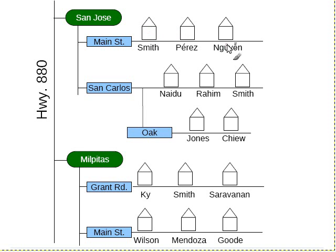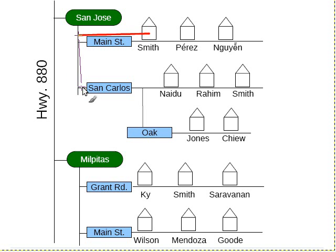When things are on the same street, it's very easy. Let's say I want to go from the Smith house to the Raheem house. We can still do this with a relative path name. We're both on Main Street right now, so we have to go back to the Connector Road, and then we have to go down to San Carlos Street. And once we're on San Carlos Street, we can go to the Raheem house. Again, it's a relative path name.